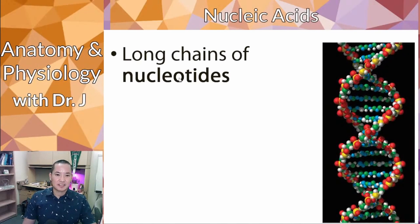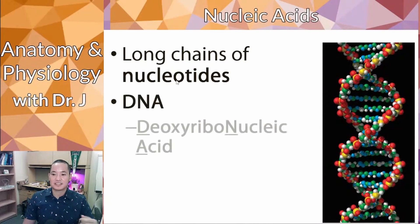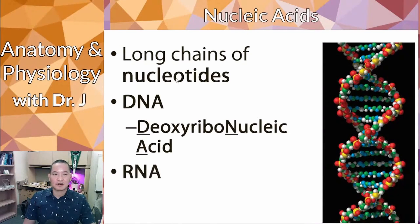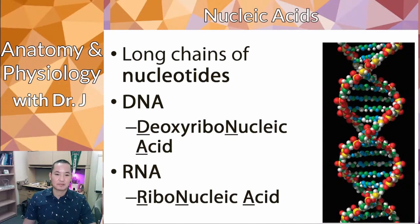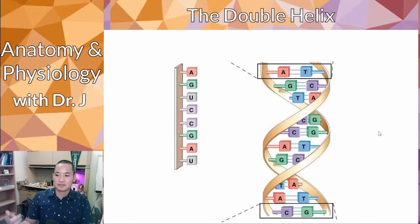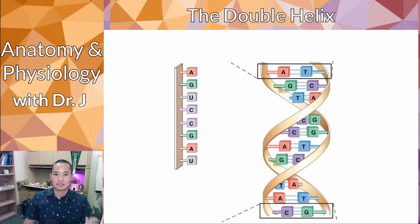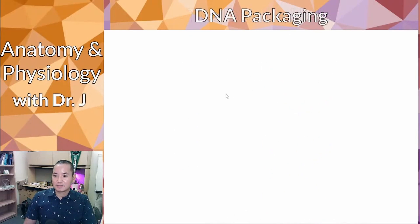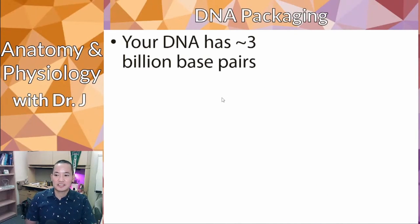Nucleic acids are long polymers — chains of nucleotides. DNA stands for deoxyribonucleic acid and RNA stands for ribonucleic acid. Now this is the structure of DNA, that double helix. You have two strands of DNA twisted around each other — that helical shape refers to a spiral. With DNA, you actually have three billion base pairs.